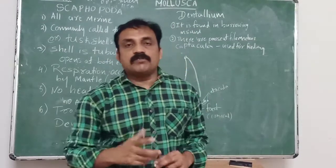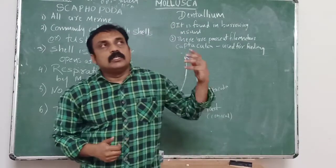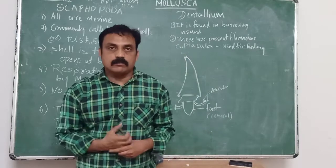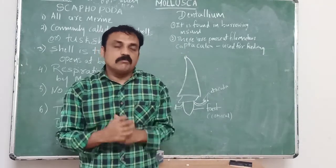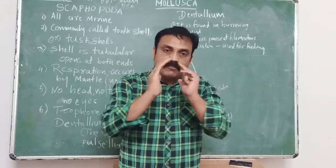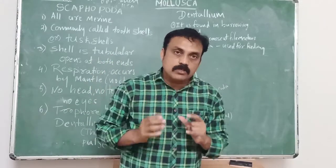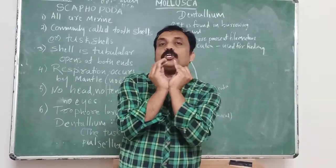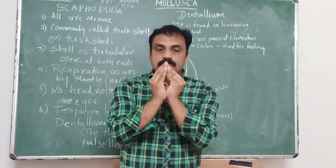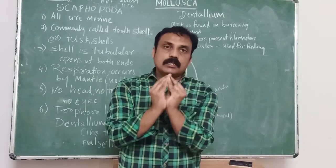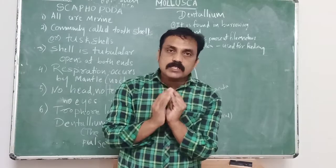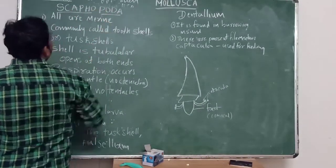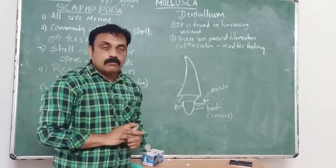Now we have to discuss another class of Mollusca after Monoplacophora and Polyplacophora. The next one is Scaphopoda. The word Scaphopoda means 'board-shaped foot.' In these organisms, the foot is conical or board-shaped, which is why the name Scaphopoda is given — 'scapho' meaning board-shaped and 'poda' meaning foot.